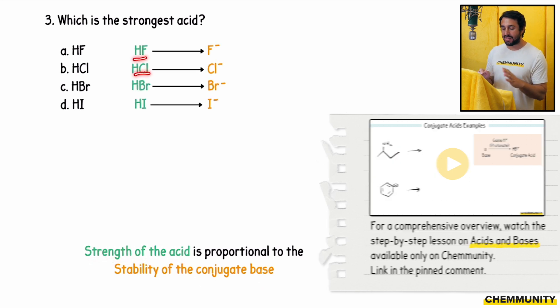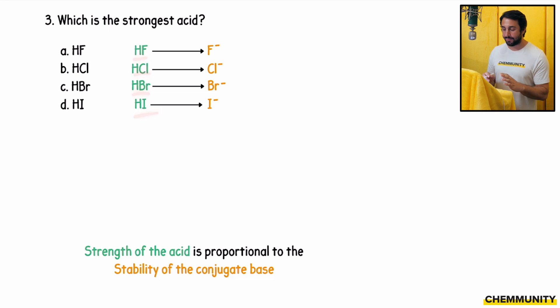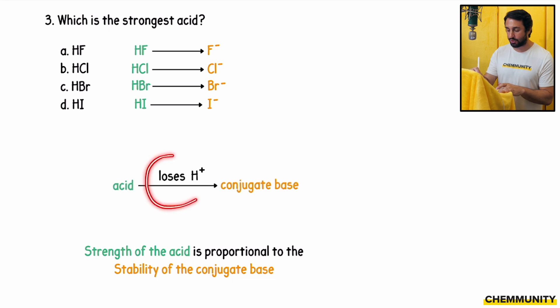So if we have HF, HCl, HBr, HI, what are the conjugate bases of these things? What are we going to get if these lose protons? HF becomes F-, HCl becomes Cl-, HBr becomes Br-, and HI becomes I-, so we get the halide ions. So now the question becomes, what is the relative stability of the halide ions that are being produced?